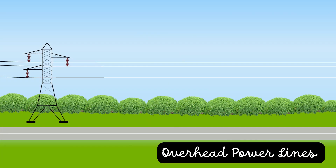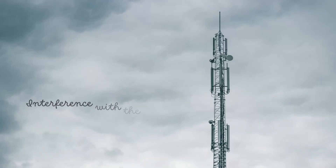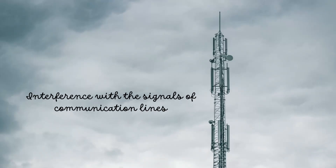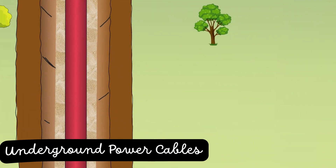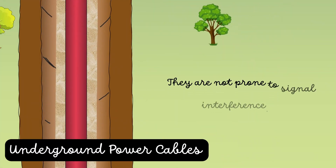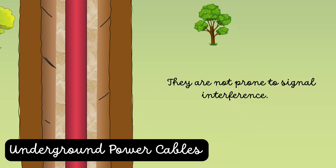Overhead power lines interfere with the signals of communication lines. Since underground cables are buried, they are not prone to signal interference.